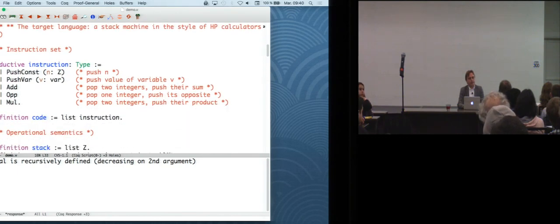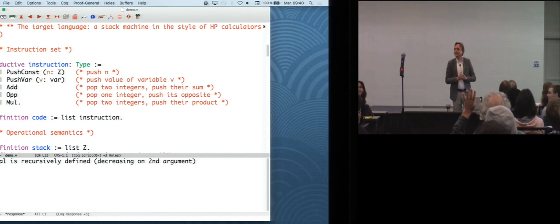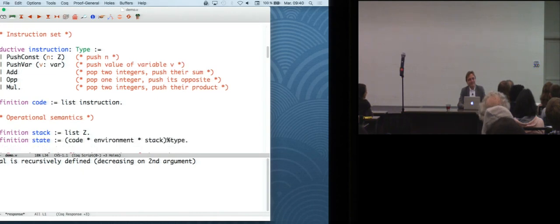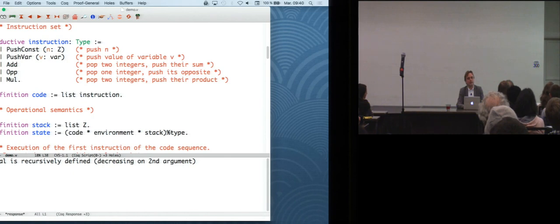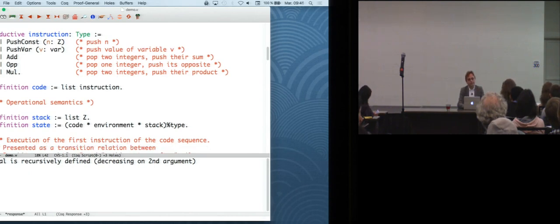Now for the target language. So as I said, it's a stack machine in the style of Hewlett-Packard calculators. So how many of you have used the Hewlett-Packard calculator in reverse-polish notation mode? OK, well, pretty good. OK, so this is instruction set. It has five instructions. Push const will push an integer constant on the stack of the machine. Push var will push the value of the variable on top of the stack. And then there's some arithmetic operations, like add. So it's a stack machine, right? So the operands are popped off the stack and combined, like added, and the result is pushed back. So we have addition with two arguments. We have opposite that just takes the opposite of the top of the stack, and multiplication.